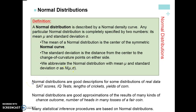Normal distributions are good descriptions for a lot of real-life data: SAT scores, IQ tests, lengths of crickets, yields of corn. In college, my professor would graph all of our scores and make a bell curve out of it. They're also good approximations for processes of chance outcomes — for example, the number of heads in many tosses of a coin. In the future, we're going to use normal distributions to make statistical inferences, meaning we'll make predictions based on the normal curve and associated probabilities.